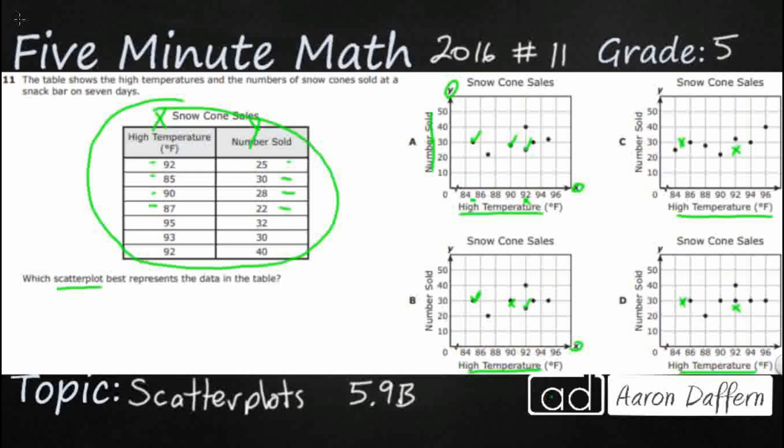87, 22. So 87 is right here between 86 and 88 and 22 is just a hair above 20. So that is looking good. Let's look at 87, 22 on B. Once again, look, see, B is out because that 22, that should be right above the 20, not on the 20. So there we go. There's confirmation that B is out.